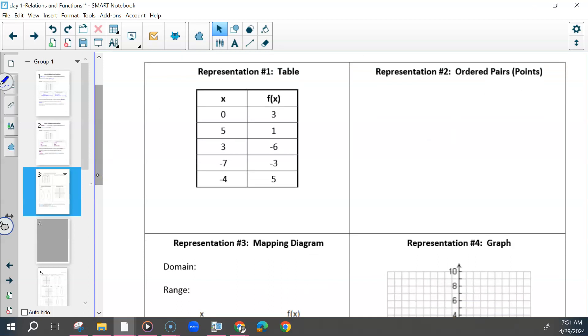So in ordered pairs, you're going to write just curly brackets, because you want the set of all of these. And then you're just going to write each set of ordered pairs in parentheses. And then end it with curly brackets.